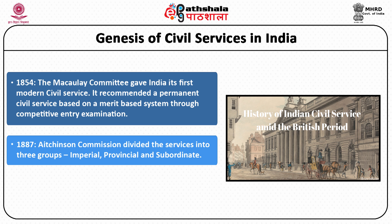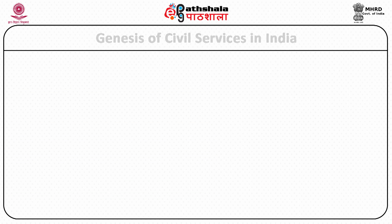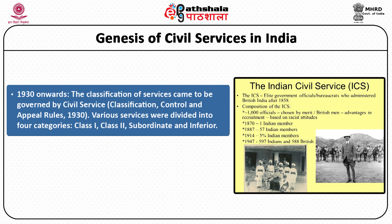In 1887, the HSN Commission divided the civil services into three services: Imperial, Provincial and Subordinate Civil Services. In 1919, under the Government of India Act 1919, the Imperial Services were divided into two — that is All India Services and Central Civil Services. From 1930 onwards, civil services in India were governed by the Civil Services Classification, Control and Appeal Rules 1930.